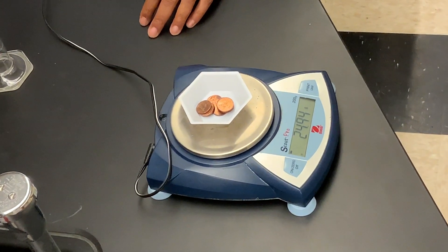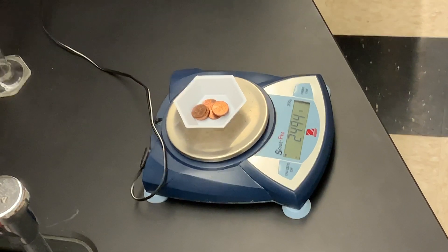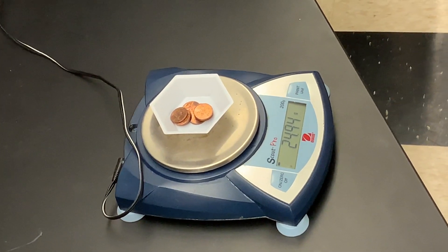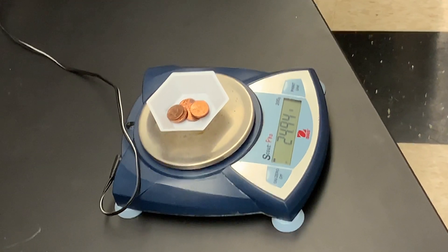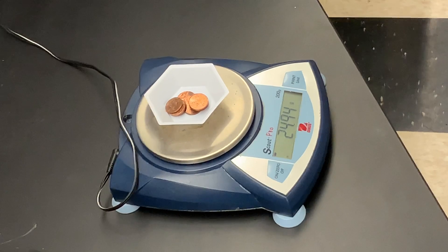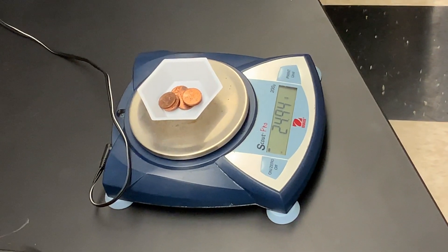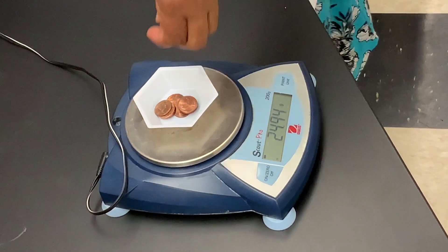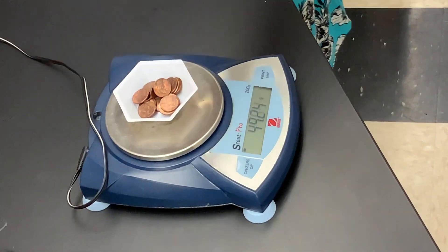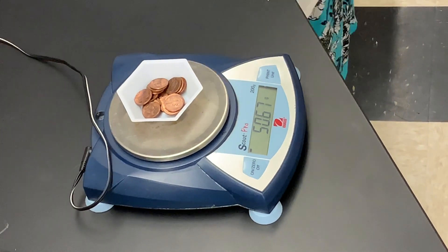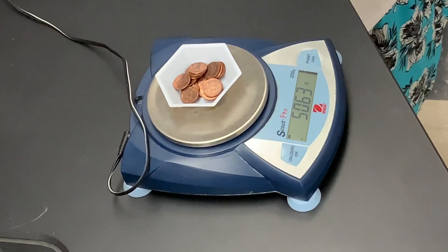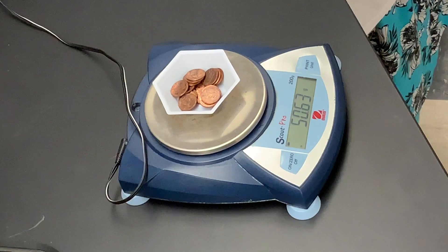Next, we're going to add 10 more pennies to the 10 that are already there, giving us a total of 20 pennies. Again, add them very gently. The mass of 20 pennies is 50.63 grams.